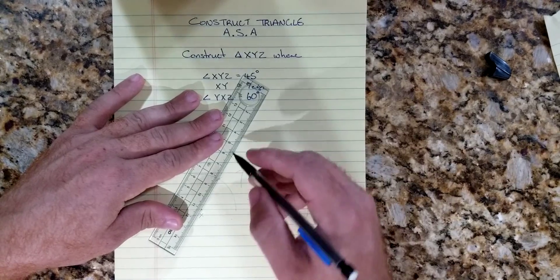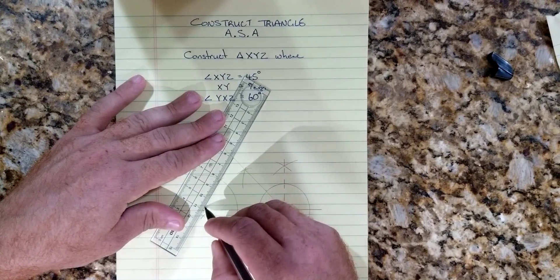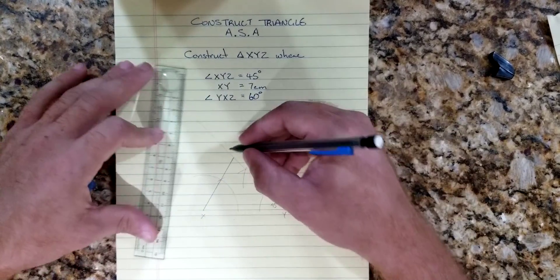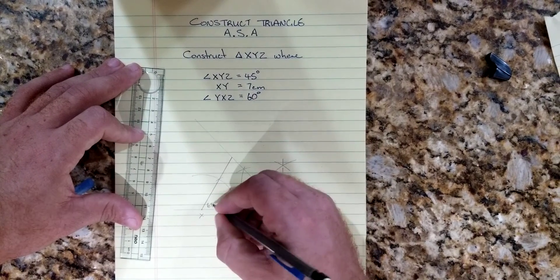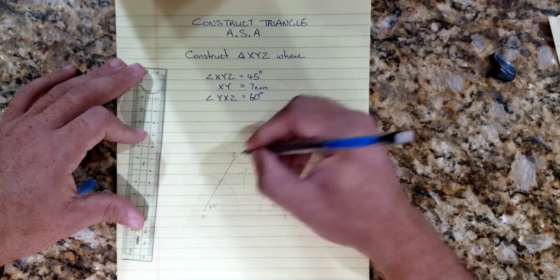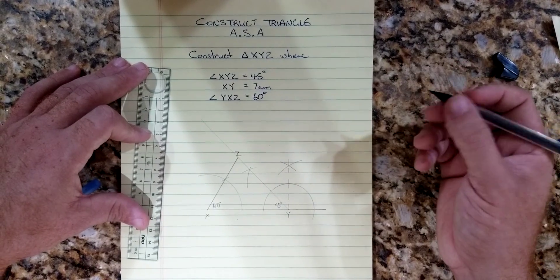So now we have our 60 degree angle and we draw a line, and where the two lines meet here for the 45 degrees and the 60 degrees, that is our point Z and there you have your triangle.